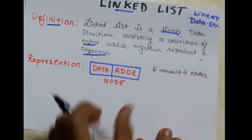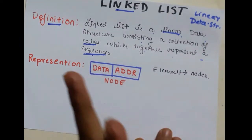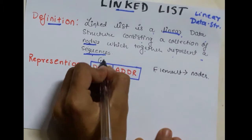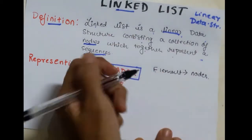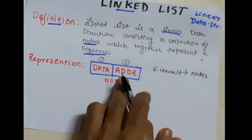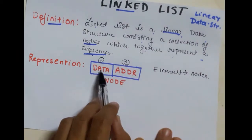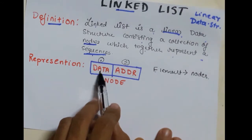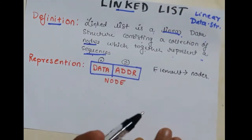This is the representation of a node. A node consists of two fields. The first field is called the data field, and the second field is called the address field. The data field will consist of a value, and that value can be of any data type — integer, character, float, or any.